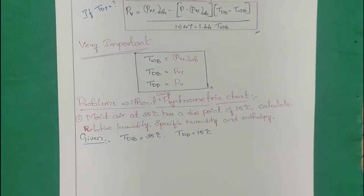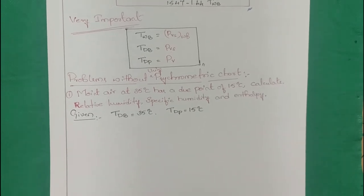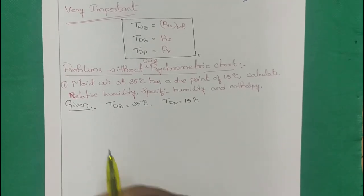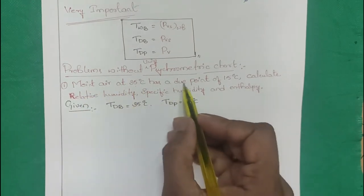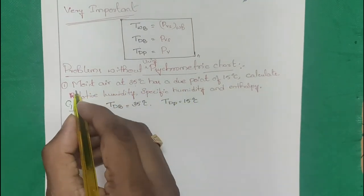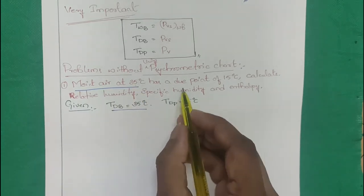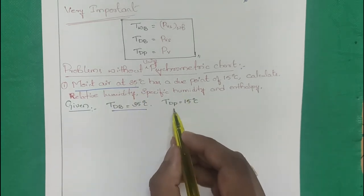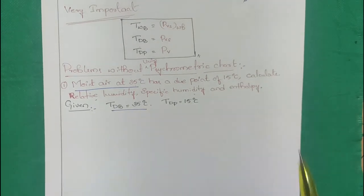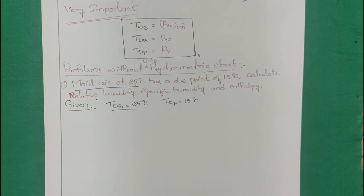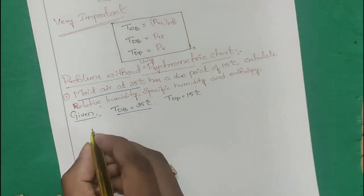Now we solve problems without using a psychrometric chart. Problem 1: moist air at 35°C (dry bulb temperature) with a dew point of 15°C. Calculate relative humidity, specific humidity, and enthalpy. First, identify: moisture temperature = dry bulb temperature.